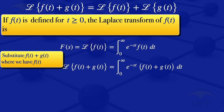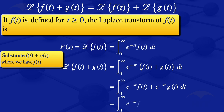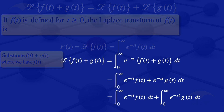This follows from the definition. We multiply throughout by e to the minus ST and get the integral from zero to infinity of e to the minus ST times F of T dT plus e to the minus ST times G of T dT. By properties of integrals, we can separate those two terms at the addition, giving the integral from zero to infinity of e to the minus ST times F of T dT, plus the integral from zero to infinity of e to the minus ST times G of T dT.